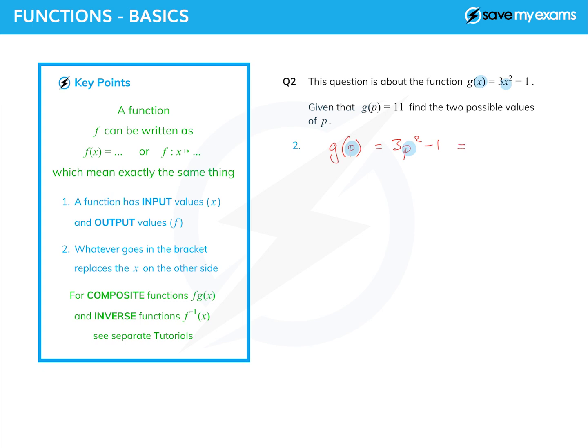And I'm told that g(p) is equal to 11, and so I have here an equation to solve. And that's going to allow me to find the values of p. So we're not really doing functions anymore, we're just solving an equation. I'm going to add 1 to both sides to get the term with p in it on its own.